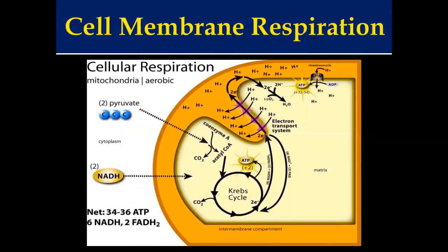In Otto Warburg's research, he showed that if you can decrease the cell's oxygen level by 35% for 48 hours, you shut down this Krebs cycle and you start to burn glycolysis. And that became the first technical definition of a cancer cell — when the body is not using the Krebs cycle correctly.